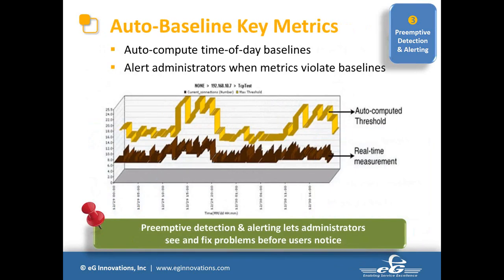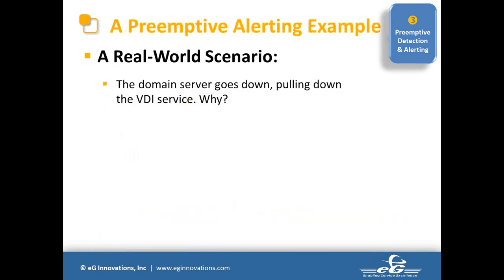Auto-baseline learning is a key feature. For information like a user session or TCP session that constantly changes over time, we provide flexibility — you don't need to define thresholds manually. You can tell the system: look at my past data and calculate the threshold based on that, then apply it. So auto-baselining of your infrastructure is available.